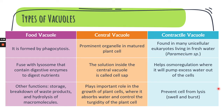The last type is the contractile vacuole, which can be found in many unicellular eukaryotes living in fresh water, like paramecia. It helps in the osmoregulation process by pumping excess water out of the cells, preventing the cells from lysis — which means swelling and bursting.